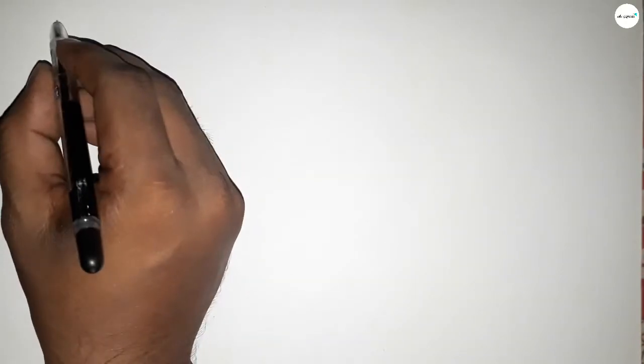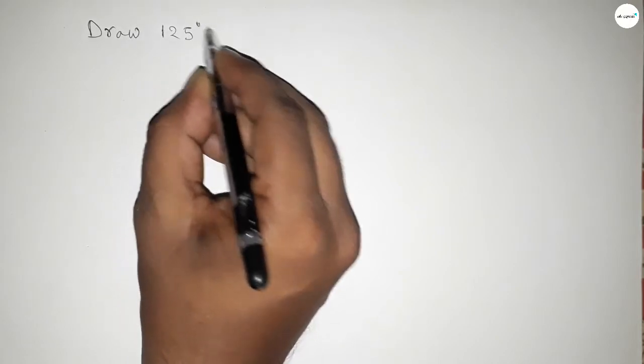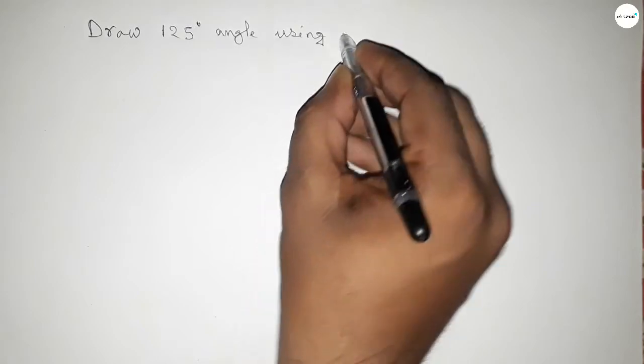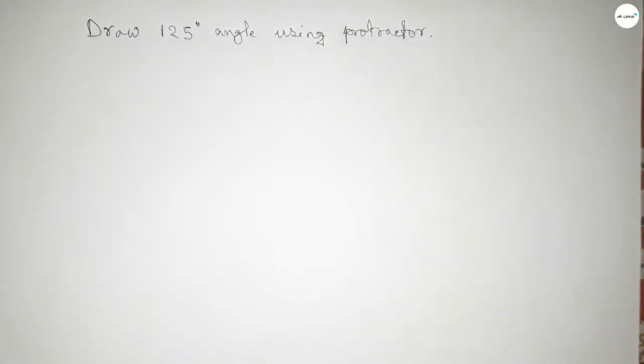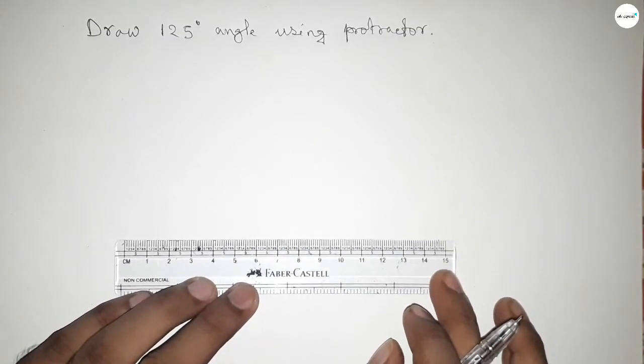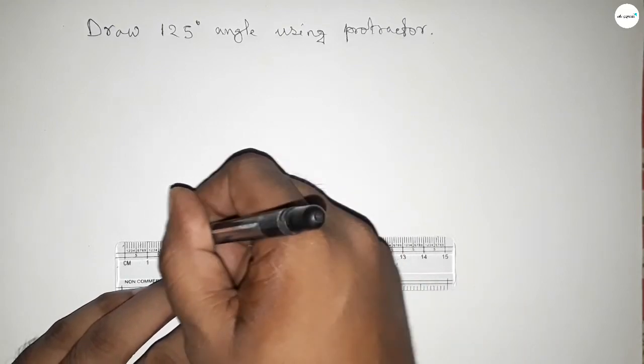Hi everyone, welcome to SSR Classes. Today in this video we have to draw a 125 degree angle by using protractor. So let's start the video. First of all, drawing here a line of any length. So first drawing a line.